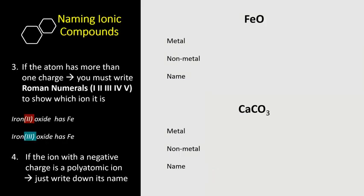Let's do some more examples. Step number three tells us that if the atom has more than one charge, you must write Roman numerals I, II, III, IV, V to show which ion it is. So we know iron has two charges.